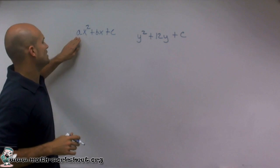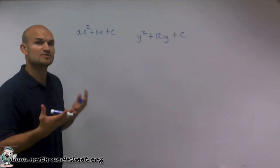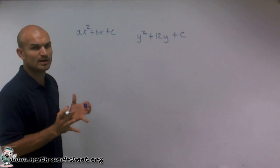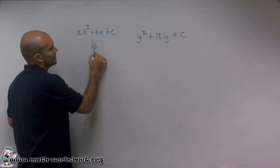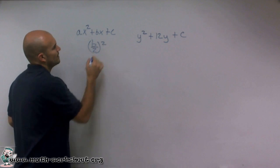Most importantly, we want to make sure that our a is 1. Now, completing the square just follows a pretty basic system. We're going to take our b, divide it by 2, and then square it.